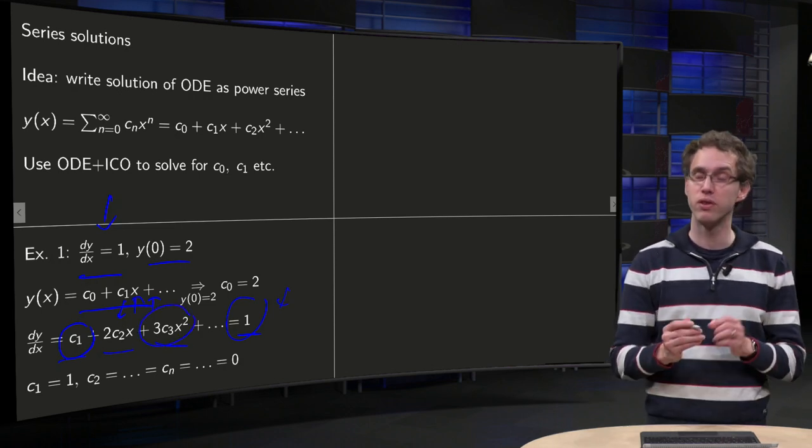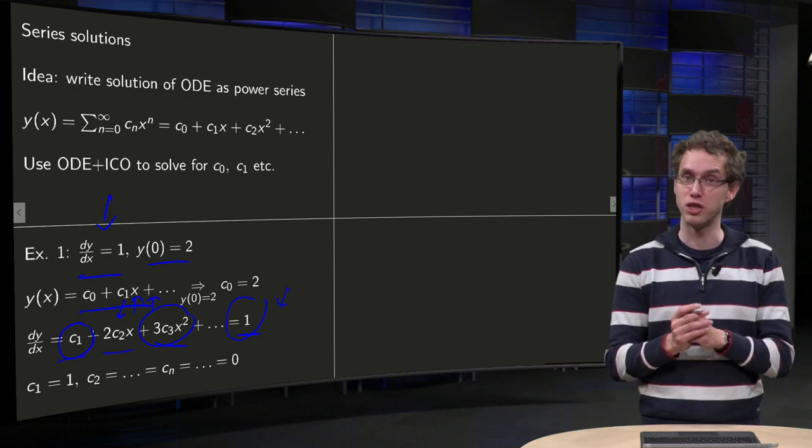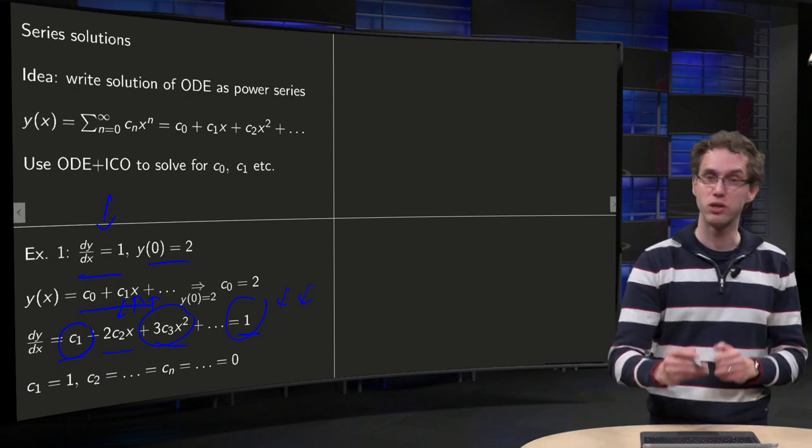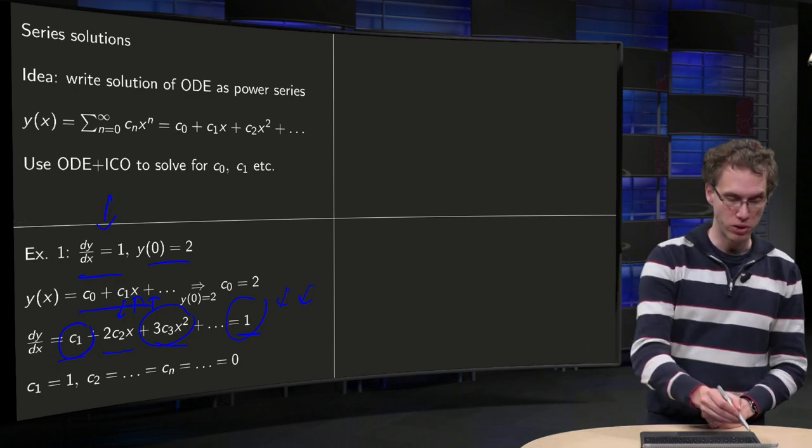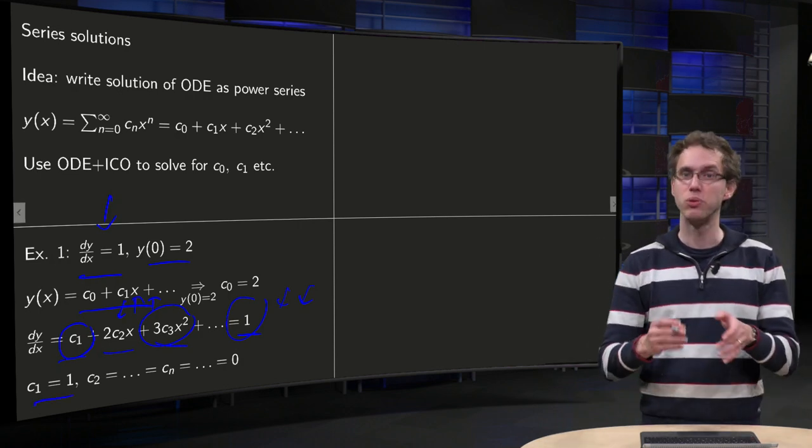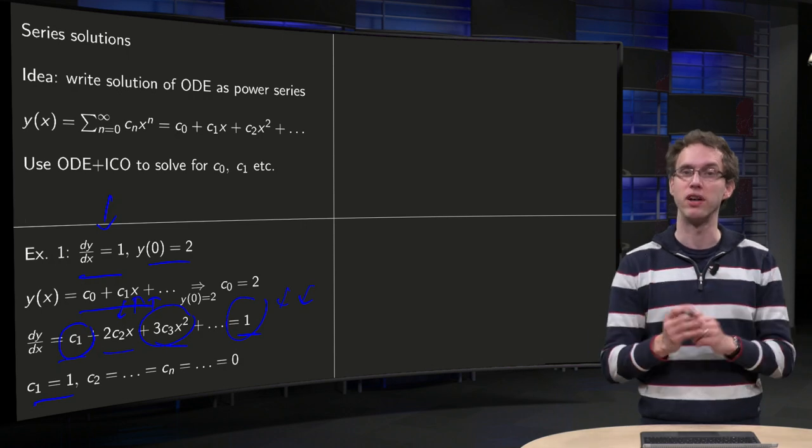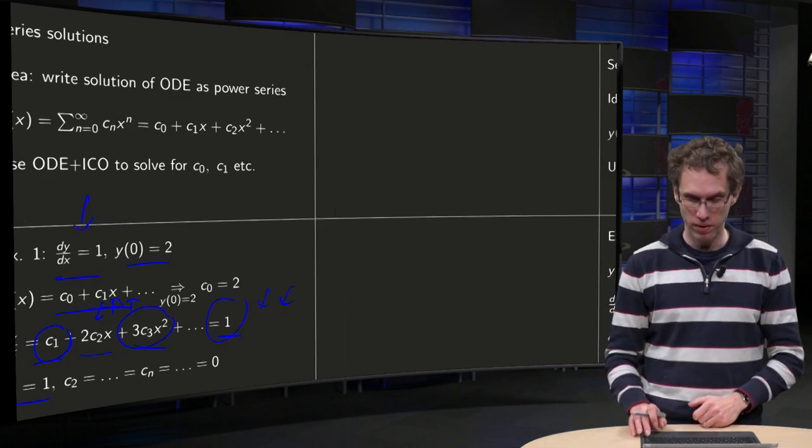no x squared here, so also 0. So you see all the other cn's are all 0, so c1 equals 1, and c2 up to cn, all of them are 0.